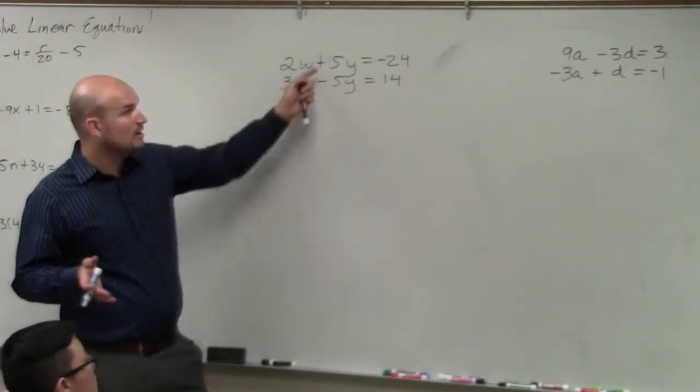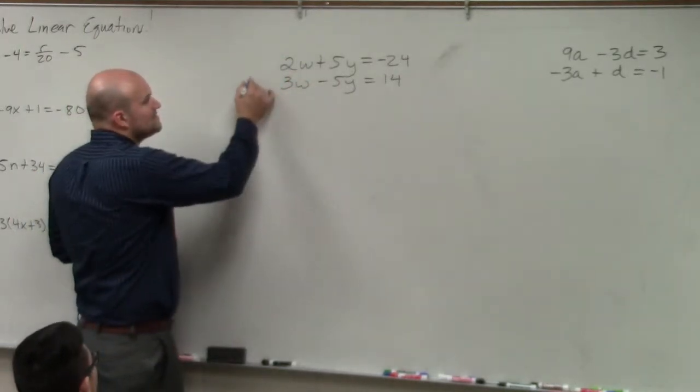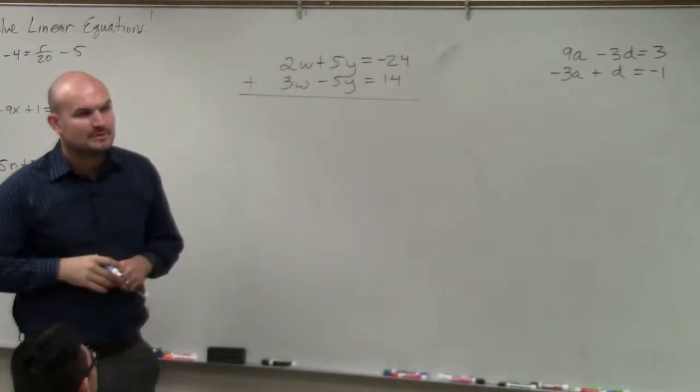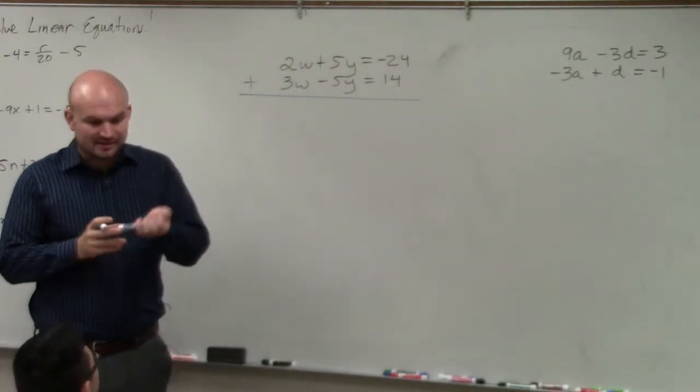So since they have the same coefficient, one positive, one negative, all I'm simply going to do is add the two equations, all right? And you're just going to add them vertically.